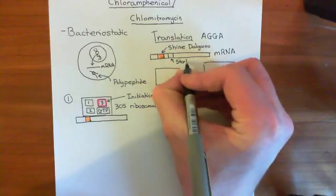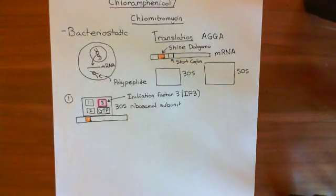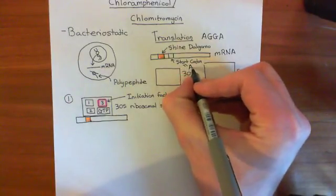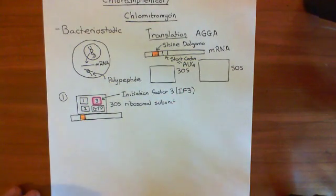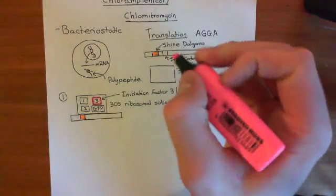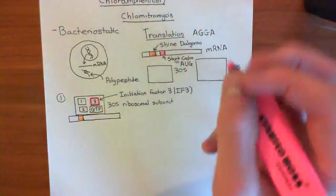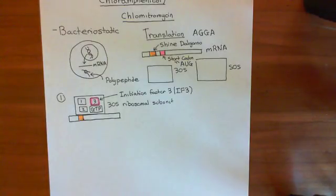The start codon is where you will actually begin translation. It always has the specific organic base sequence AUG - which is helpful to remember because 'augment' means make bigger, so that's a handy way of remembering this is the start of translation. The Shine-Dalgarno sequence is usually around five to ten organic bases upstream of this start codon.